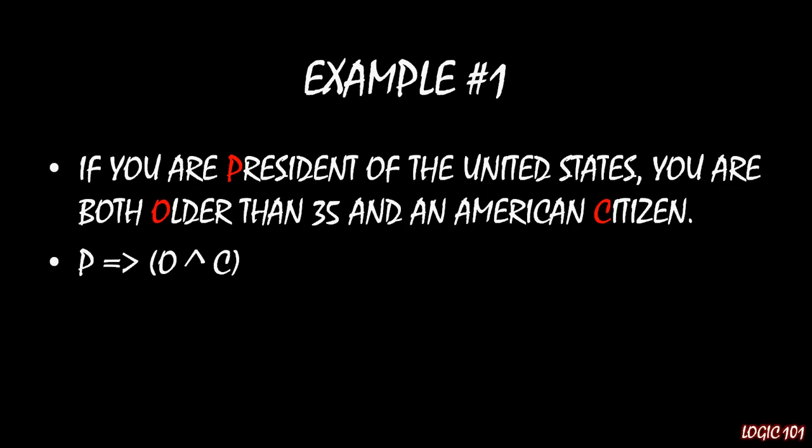So IF P, THEN the conjunction of O and C. So if you are President of the United States, then it must be true that you are older than 35, and it must be true that you're an American citizen. Unfortunately, the other examples won't be this easy.